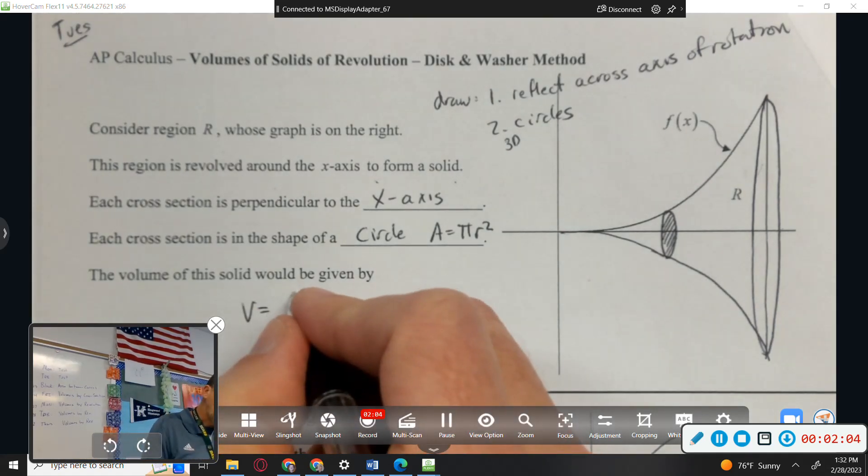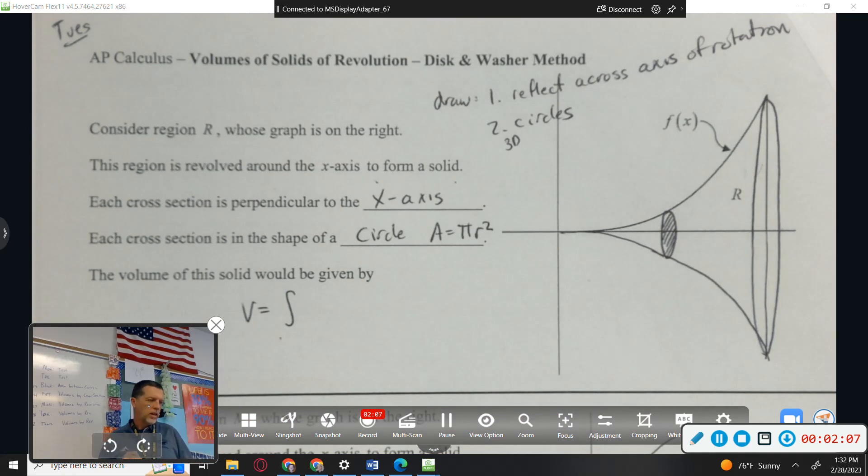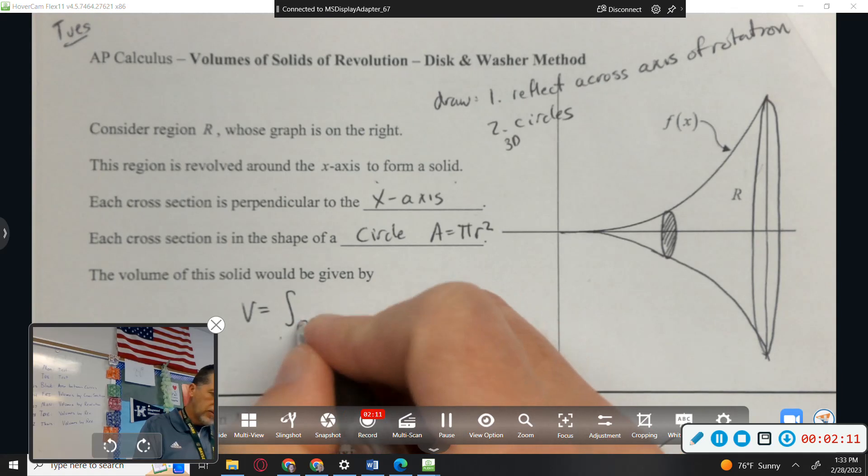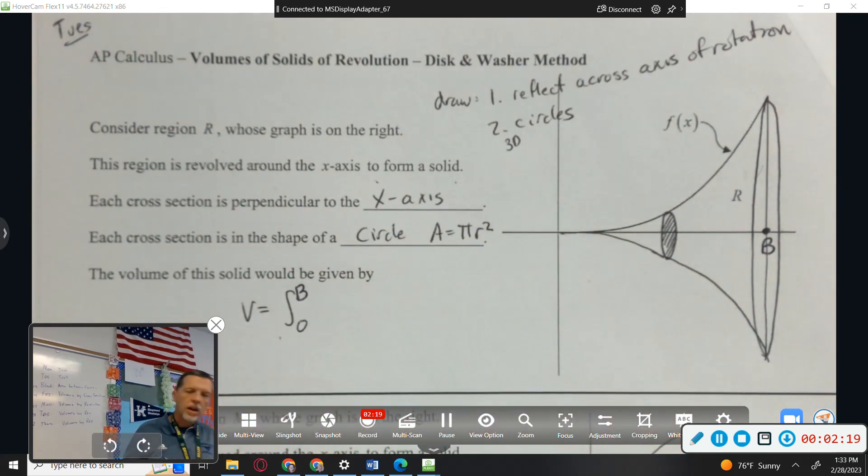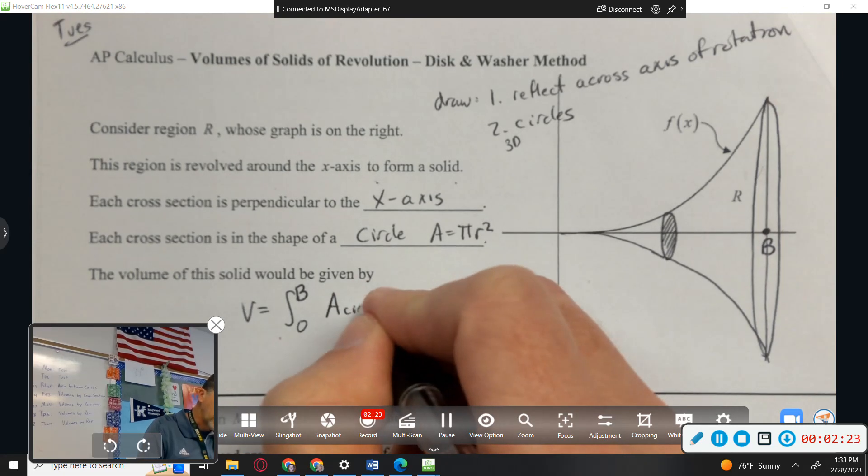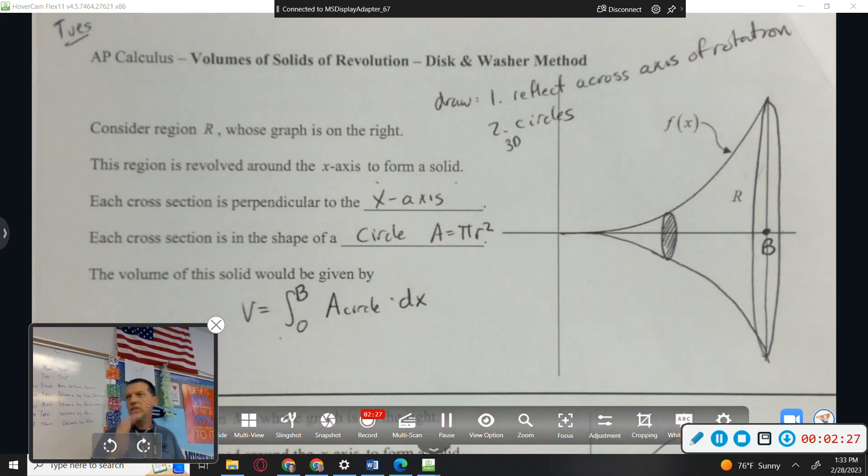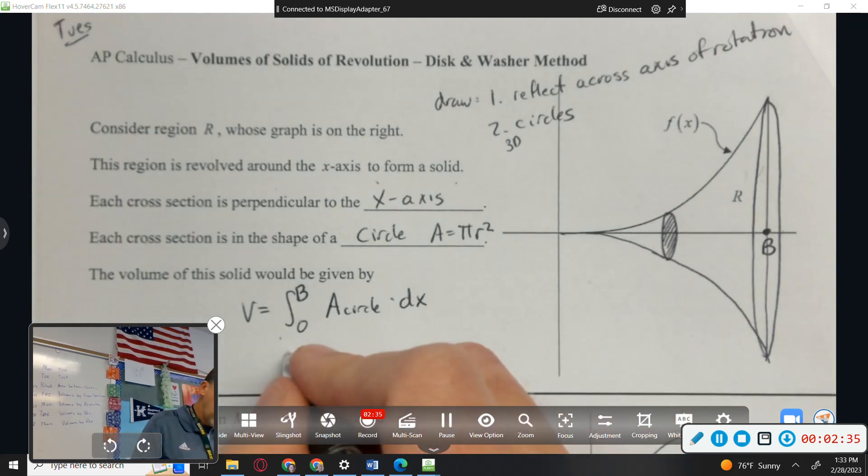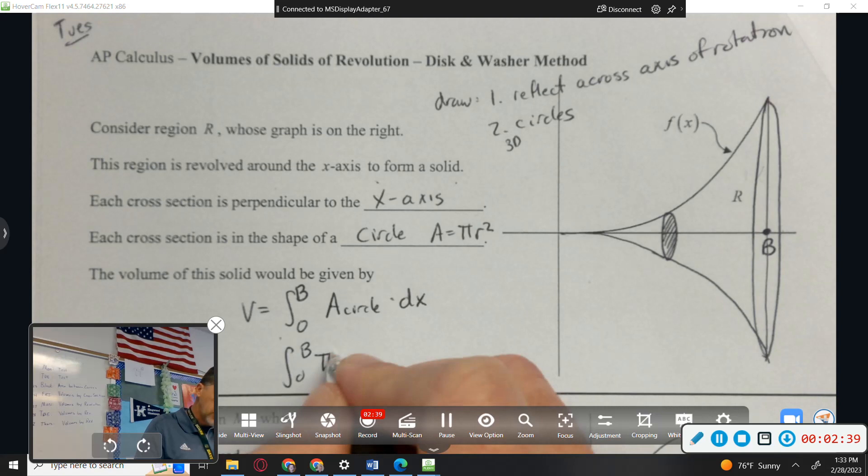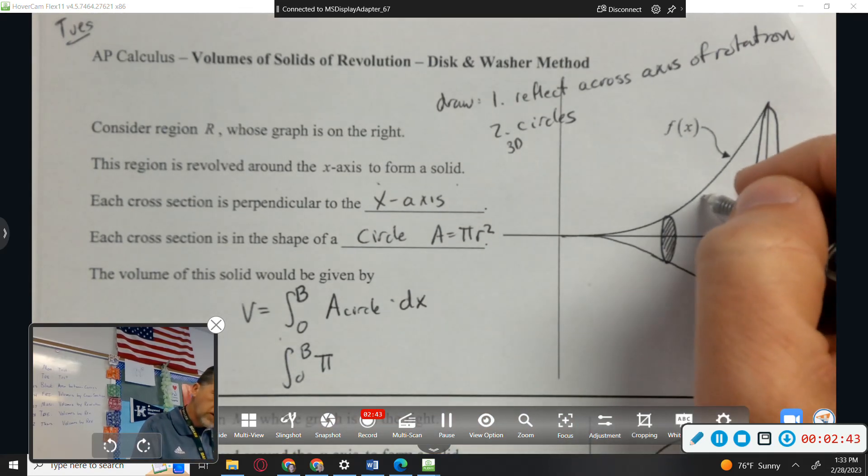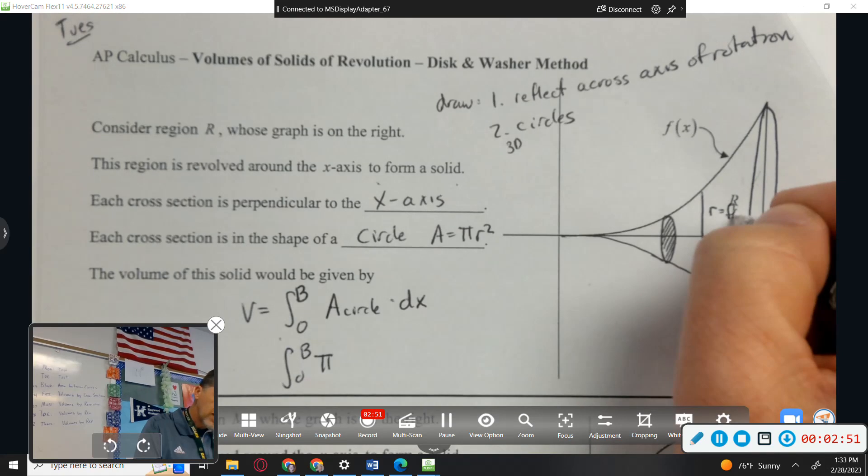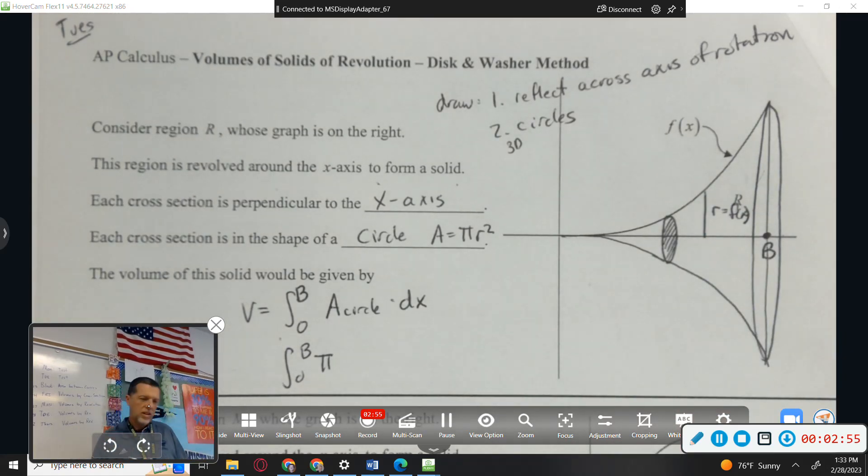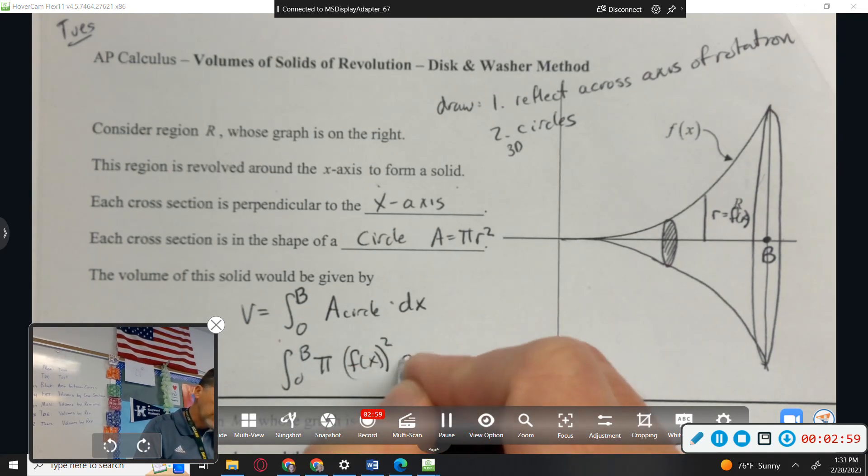Each cross-section is in the shape of a circle where area equals pi r squared. So the volume would be the integral from 0 to B, and I'm just going to put area of a circle right there times dx because all of those circles have that infinitely small thickness of dx. The area of a circle is pi times r squared, but that height is the y value, is the function. So pi times f(x) squared dx.